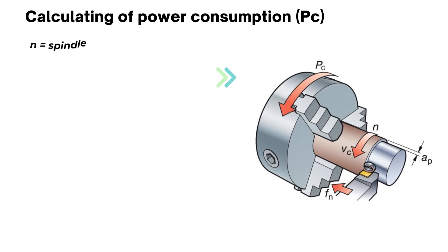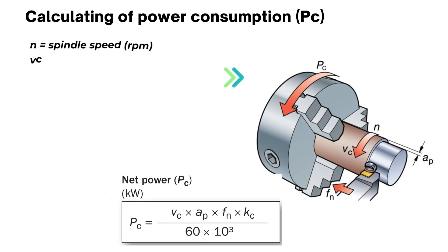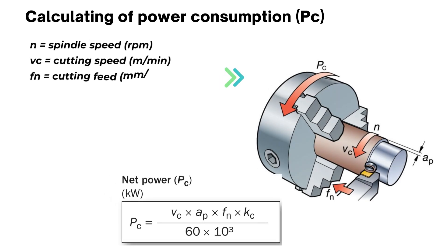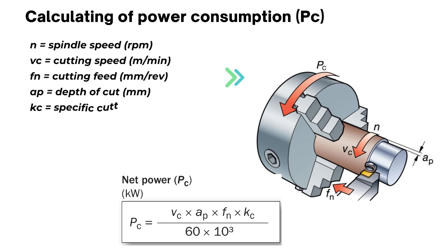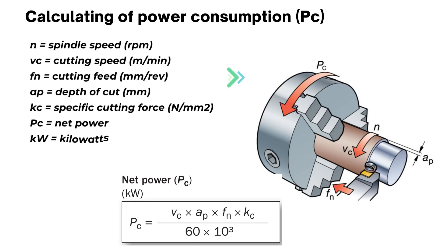The net power required for metal cutting is mainly of interest when roughing, where it is essential to ensure that the machine has sufficient power for the operation, measured in kilowatts. The efficiency factor of the machine is also of great importance.